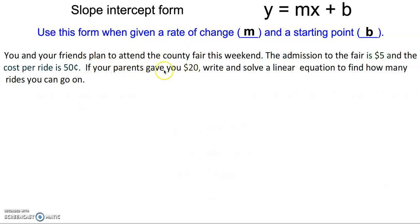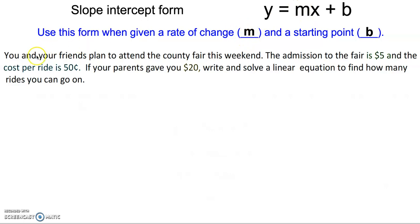If your parents gave you $20, write and solve a linear equation to find out how many rides you can go on. The rate of change is the slope in our equation. So we need to look for and see if we can find a rate of change in the problem.